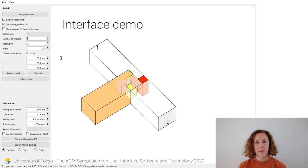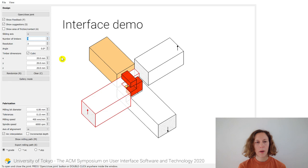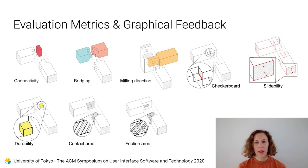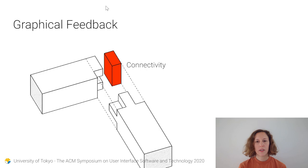You might have already noticed the colorful lines and fills that appear. This is real-time graphical feedback about the joint performance. Here is an overview of the eight evaluation metrics that we consider, which I will demonstrate one by one in the interface.